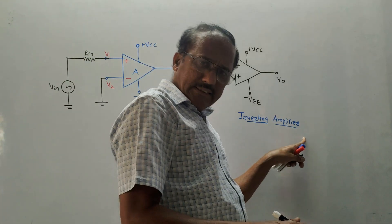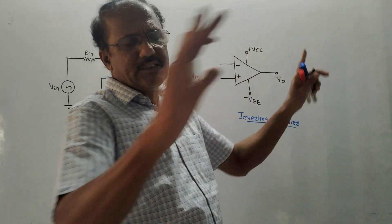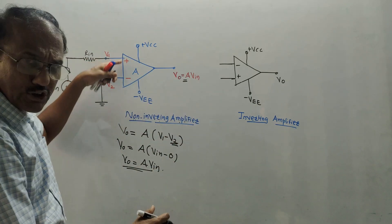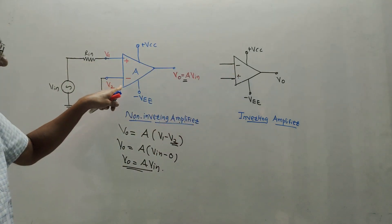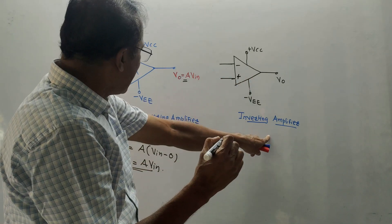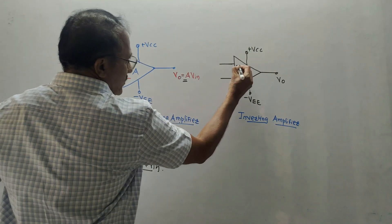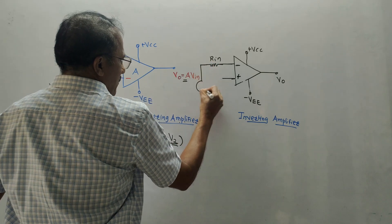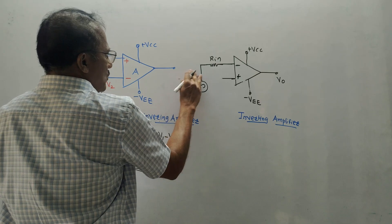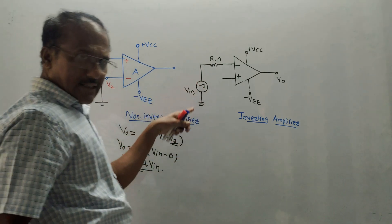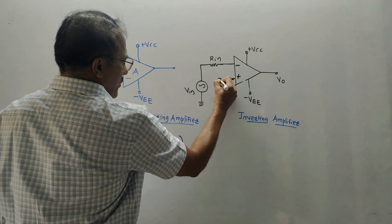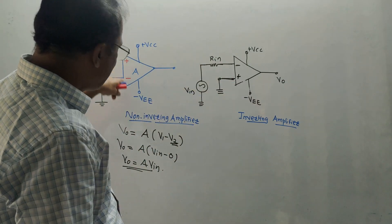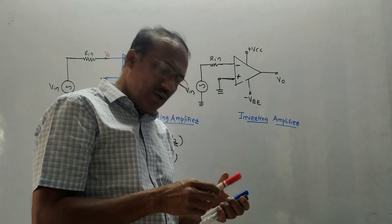Second configuration: the inverting amplifier. To draw this diagram, I have simply interchanged the positions of plus and minus compared to the non-inverting amplifier. Since it is an inverting amplifier, I need to connect the input to the negative terminal. I use input resistance RIN and input voltage VIN connected to the negative terminal, and the positive terminal is grounded.